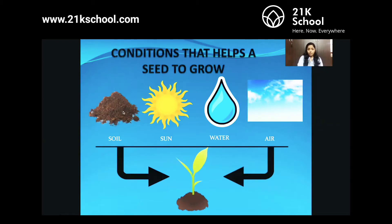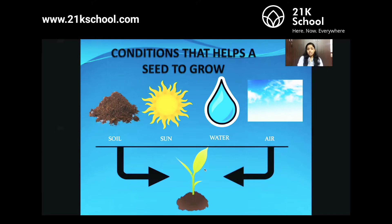The first condition is soil — that is where we sow the seeds and from where the seed gets nutrition to grow. Sunlight is very important for the plant to make its own food. Water — just like we need water and can't live without it, plants also require water. And air — just as we need to breathe, plants also need to breathe. So soil, sun, water, and air are the four important factors that help the seed to germinate and the plant to grow.